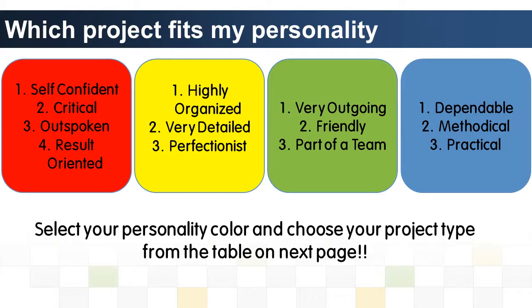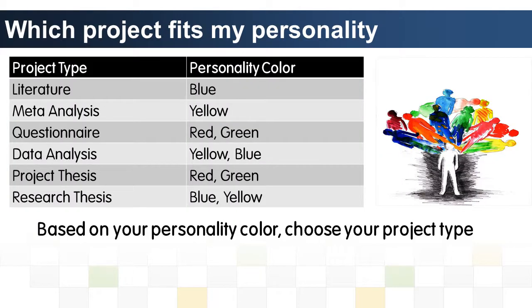I hope you're looking at the slide with four boxes with nice bright colors — there's red, yellow, green, and blue. The idea here is we'd like to pick your personality type or personality color. In the next page, we have a table that's going to help you pick what that project is going to be. So I hope you've already picked your choice of color based not just on the color, but on the details mentioned inside that box. If you look at this table, you have the project types and the personality colors — so if you had blue, your choice could be something which would use literature.